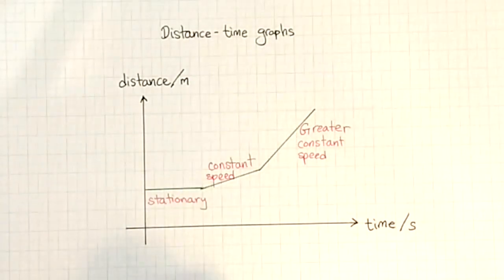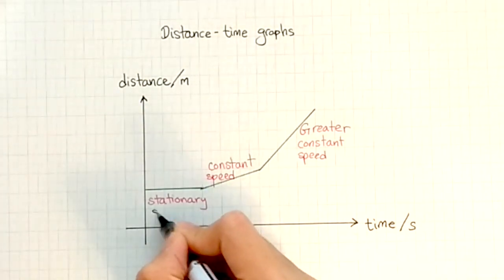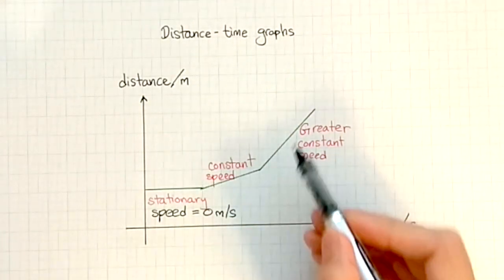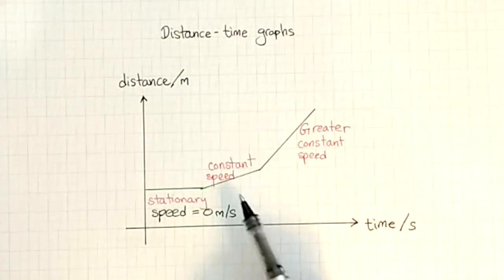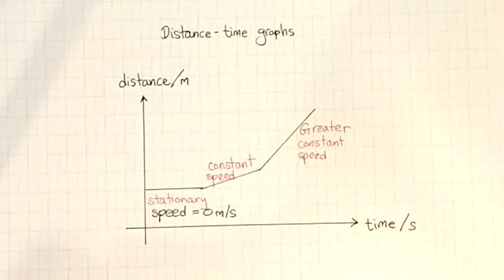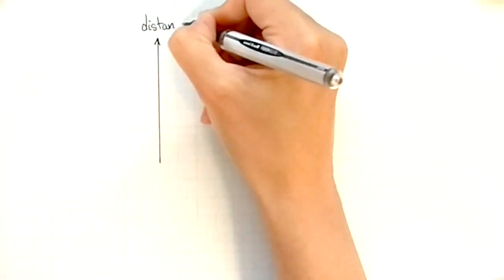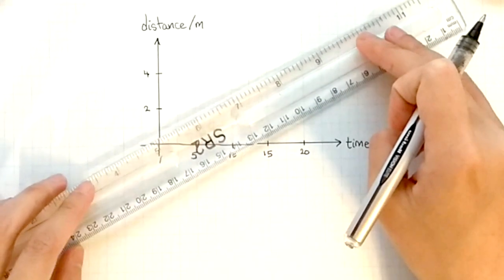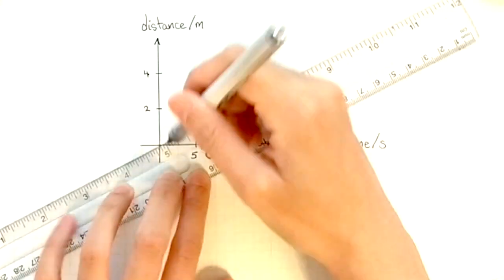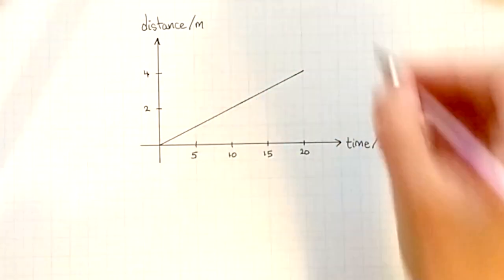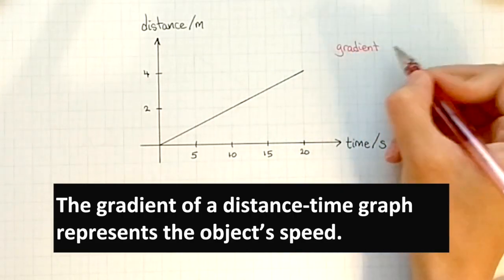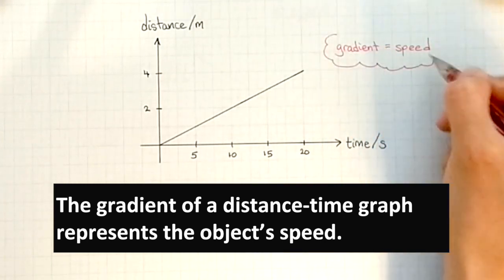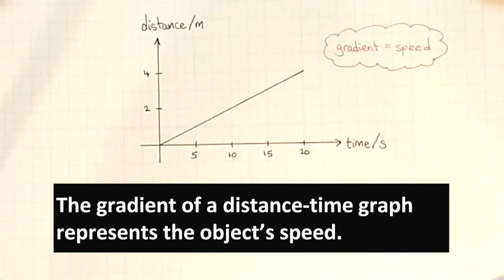An object that is stationary has a speed of 0 meters per second, so that's pretty easy to tell. But if we are asked to calculate the speed of a diagonal line on this graph, what we need to do is find the gradient. Here is a distance-time graph showing an object traveling at constant speed. Make sure you understand that on a distance-time graph, the gradient represents the speed of the object.